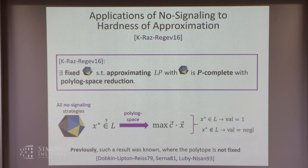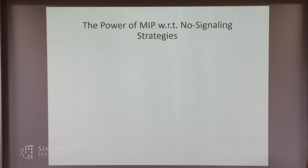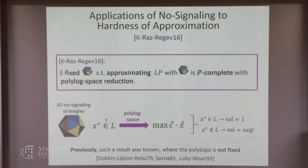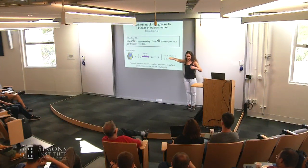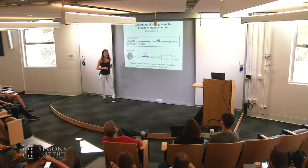What is the power of no-signaling strategy? The first set of results by Kempe et al. and Ito et al. say that it contains at least P-space. We know even one prover contains P-space, so we don't even need two. But because this is only one round with only two parties, this is a meaningful result. The question is: does it contain all of NEXP?